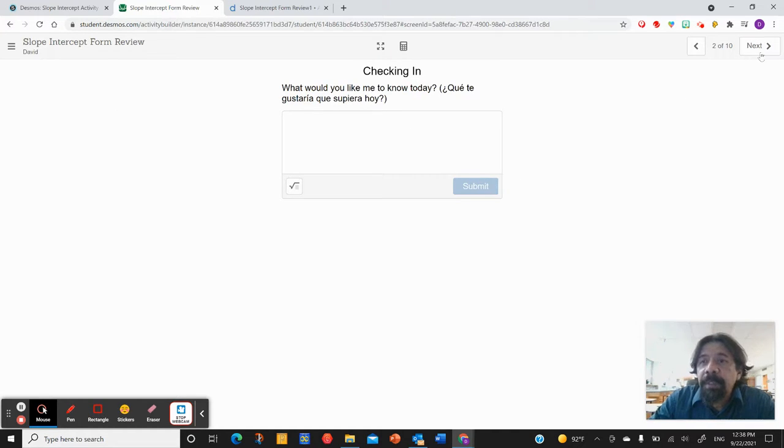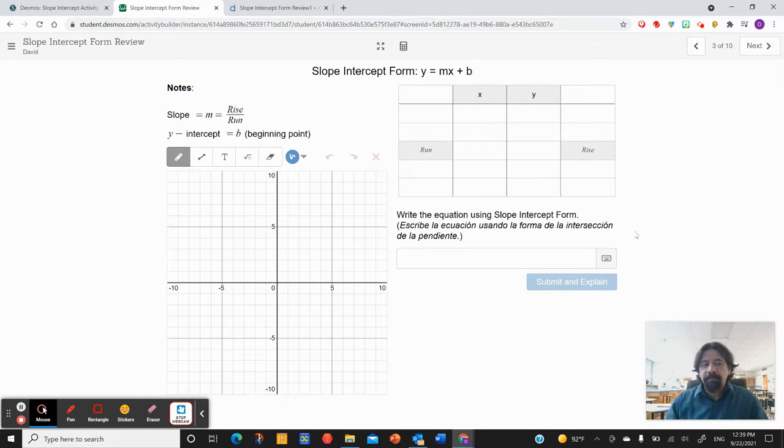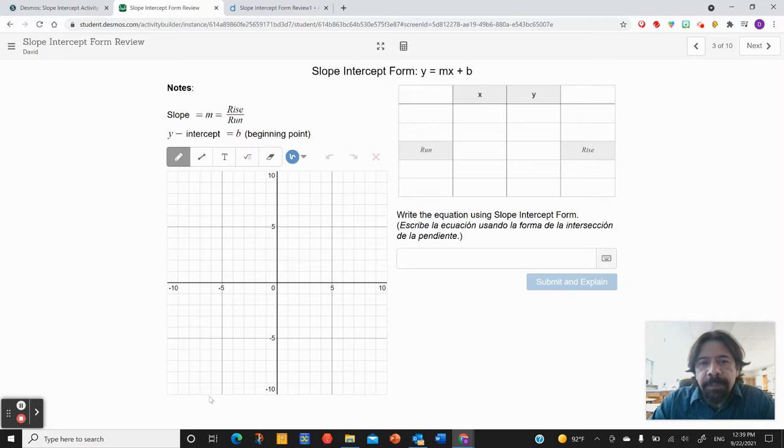Continue checking in. Anything additional you want to share with me? And then here is where we start some basic notes. I have different components that allow me to figure out the equation or work on the grid. A couple of basic things. This is a pencil, this is a line, text, equations, eraser. If I use this, I can put points, plot points throughout.